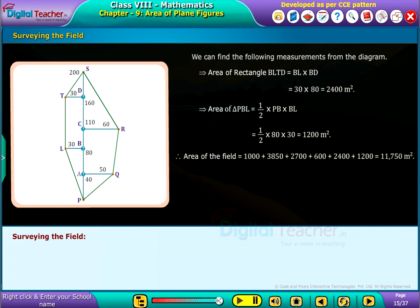Therefore area of the field is equal to sum of all these areas which is equal to 11750 square meters.